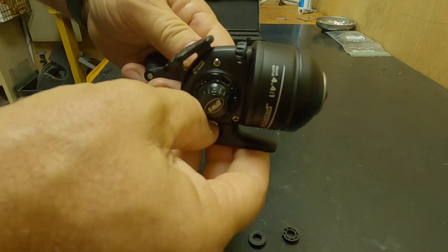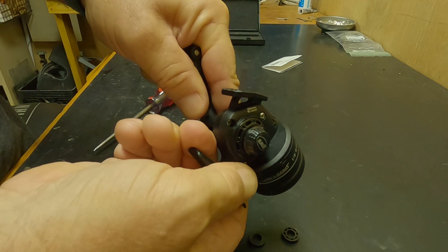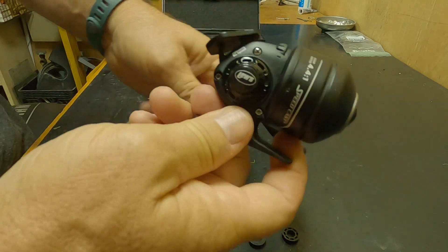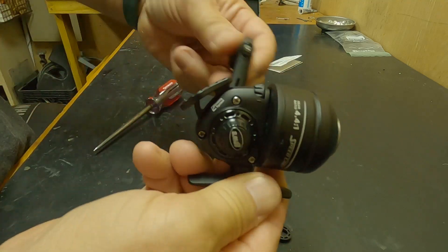There you go, a lot smoother, a lot better. No play side to side right here on the handle. Still a $20 reel, it's not a Zebco Omega that's a $100 reel, but it is an improvement.